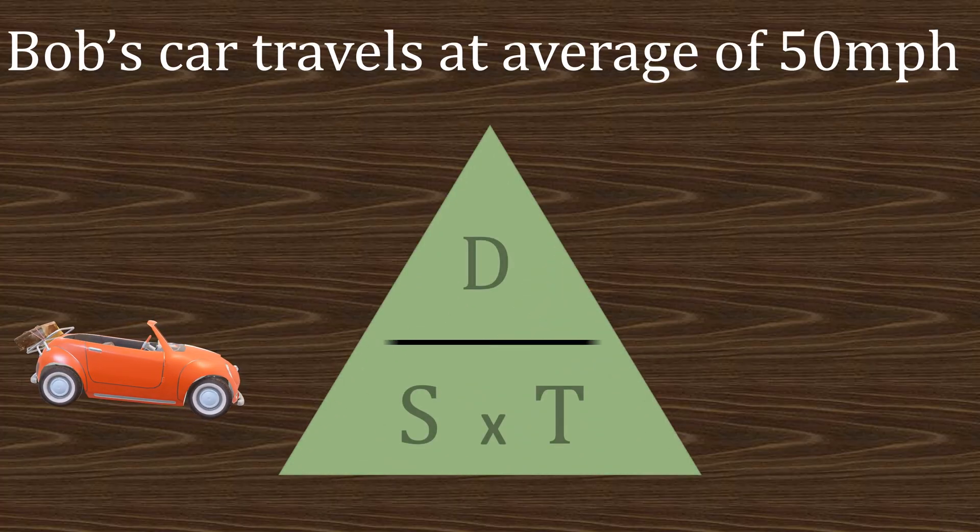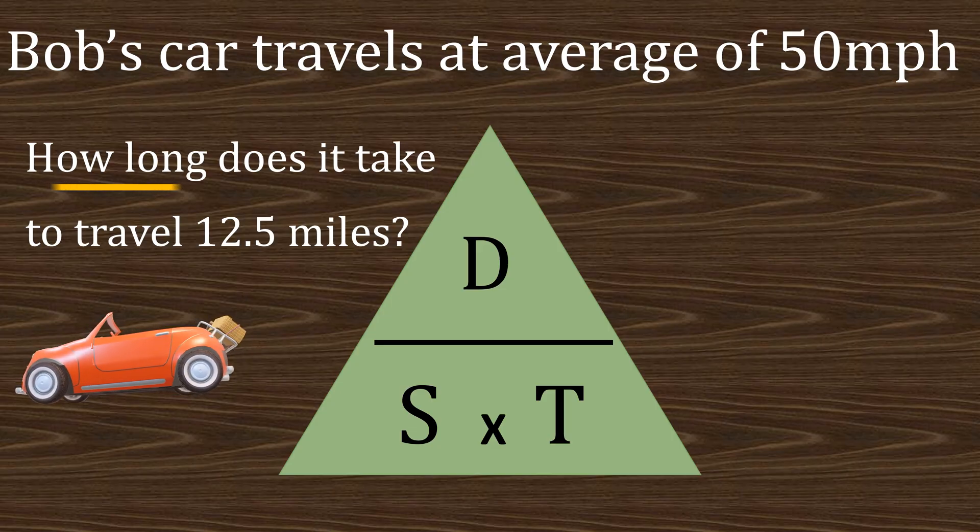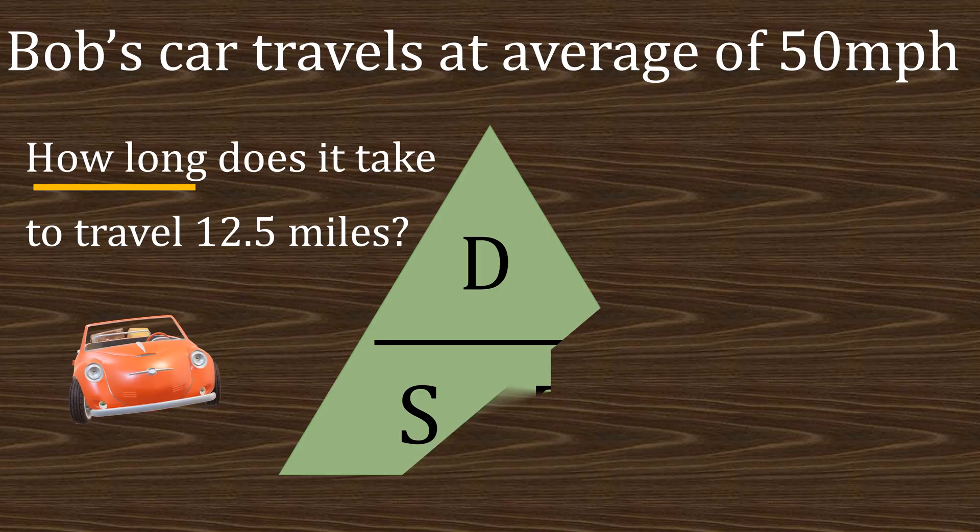Bob's car travels at an average speed of 50 miles per hour. Question: how long does it take to travel 12.5 miles? So they're asking us for the time. So cover up the time in the formula triangle which leaves